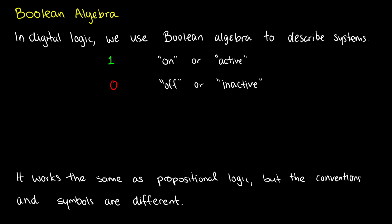In digital logic or Boolean algebra, we have ones and zeros again, which is why I use them in propositional logic, but one doesn't mean true and zero doesn't mean false. Typically we want to think of one being on or active and zero being off or inactive. It's kind of like when you have a light switch. If the light switch is turned down, then it's in the off configuration, but if it's flicked up, it's in the on configuration, so it's a one there.